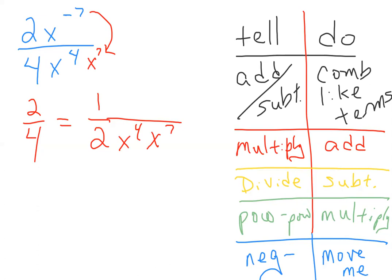We have a multiplication problem now, and I said what? Multiply needs to add, so I'm going to multiply x to the fourth times x to the seventh, and I get x to the eleventh.